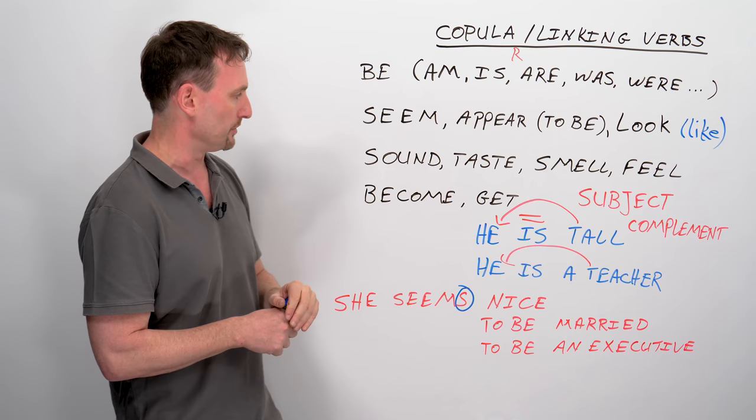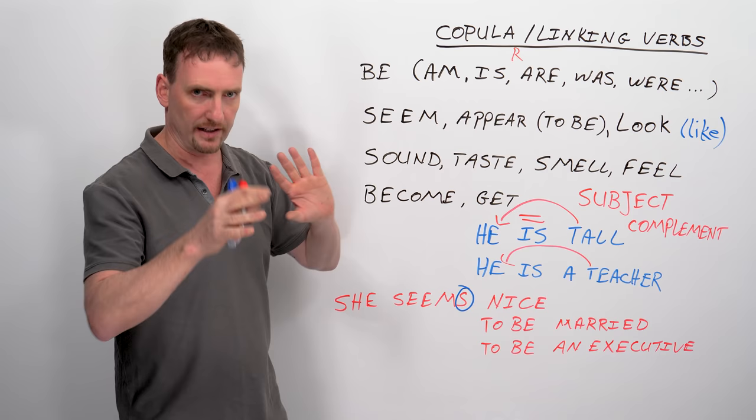Now become and get, they're a little bit trickier. So I'm going to look at them individually and I'll give you some more examples.